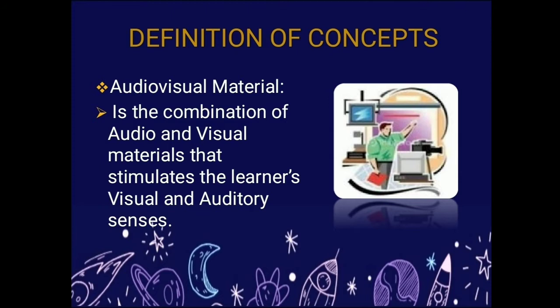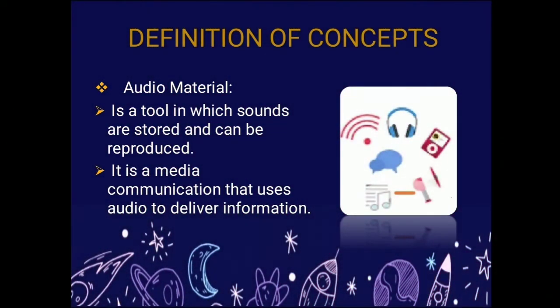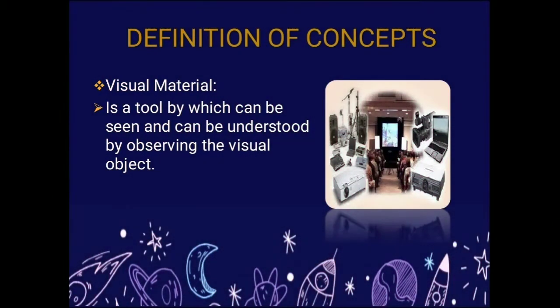Now let's proceed to the definition of concepts. Audio visual material is the combination of audio and visual materials that stimulates the learner's visual and auditory senses. Audio material is a tool in which sounds are stored and can be reproduced — it is media communication that uses audio to deliver information. Visual material is a tool which can be seen and understood by observing the visual object.